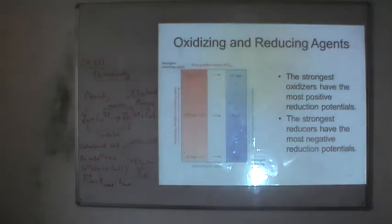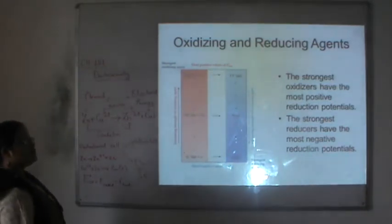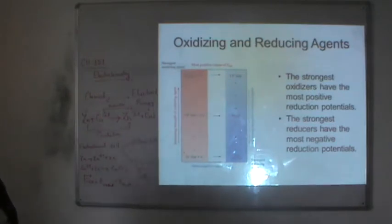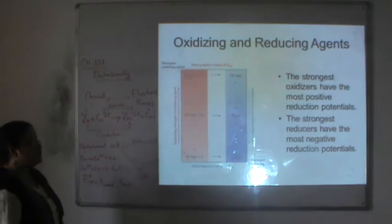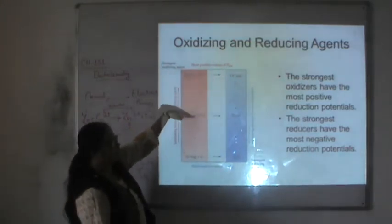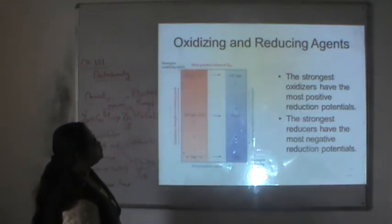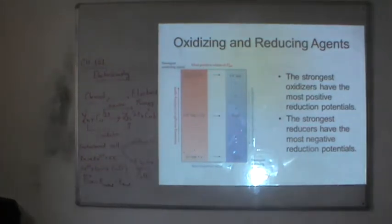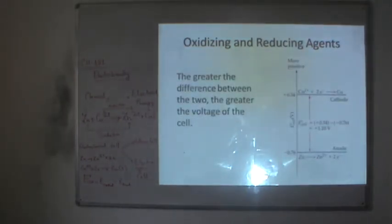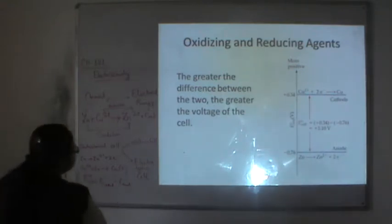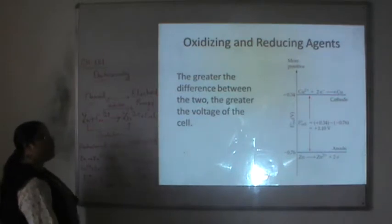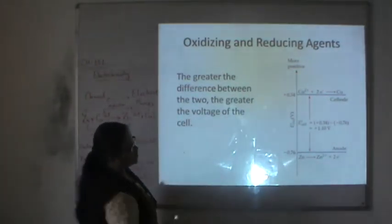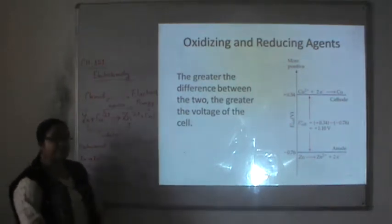From the table of standard reduction potentials, the strongest oxidizing agents have the most positive reduction potential values and the strongest reducing agents have the most negative values. Lithium is the strongest reducing agent, and fluorine is the strongest oxidizing agent; hydrogen is at zero volts. The greater the difference between the oxidizing and reducing agents, the greater the cell potential. For the zinc-copper cell, zinc is minus 0.76 V and copper is plus 0.34 V, giving E°_cell = 1.10 V.